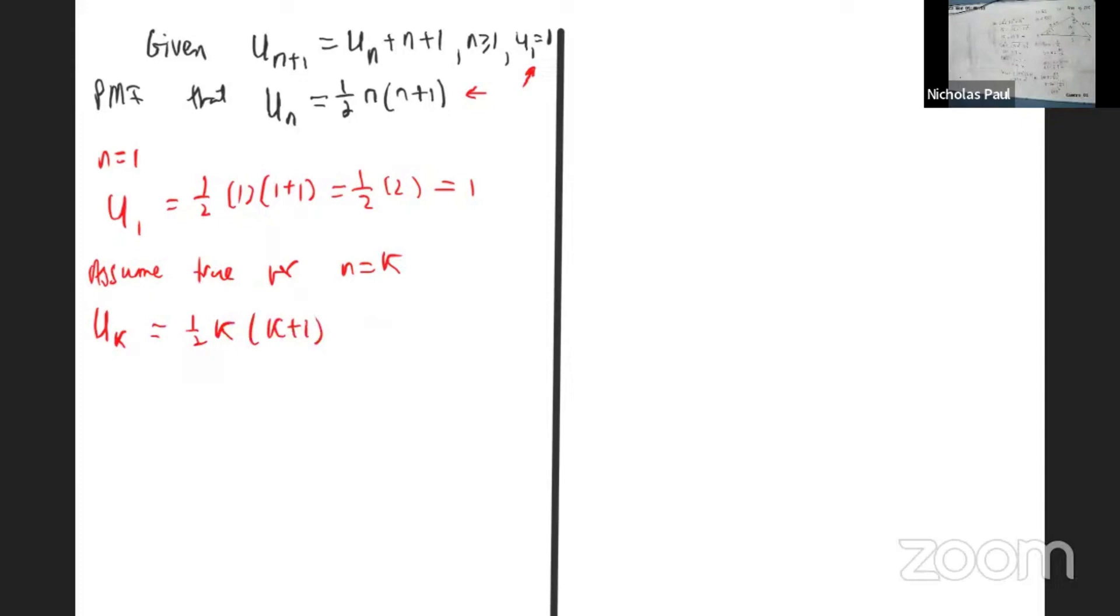And now we want to show it holds for n equals k plus one. So I'll take n and put in k plus one. So I'll be left with one half k plus one k plus one, which is one half k plus one, k plus two. So you should reach here.